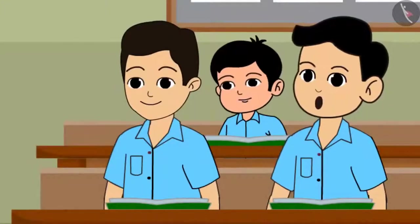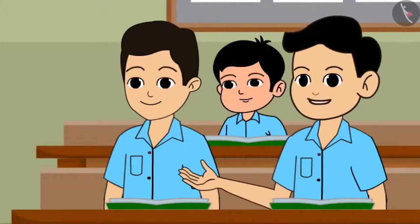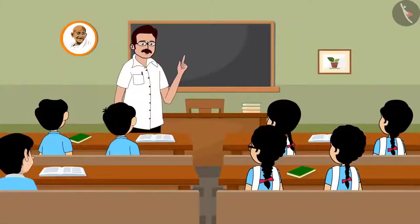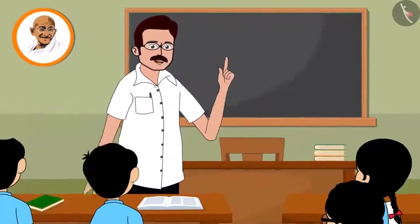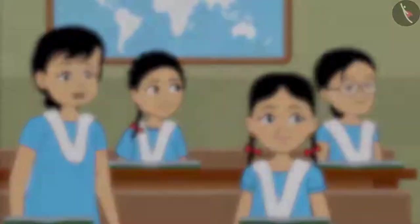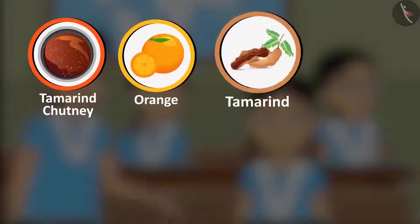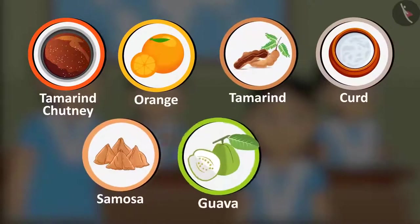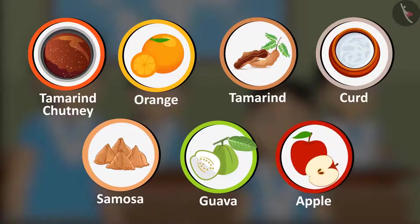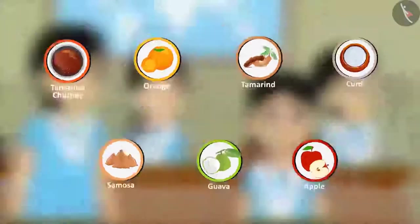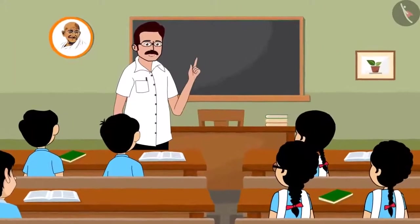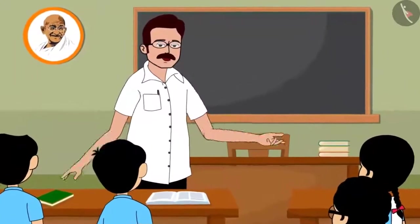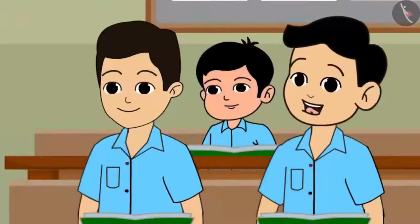I heard that acids are dangerous — Latha was telling me yesterday. Oh no, not all acids are dangerous! Mamtha, make a list of the foods you eat that are mostly sour. Tamarind chutney, orange, tamarind, curd, samosa, guava, apple... That's enough, thank you. Do you know that all these foods contain acids, which cause sourness in them?